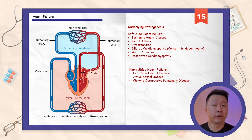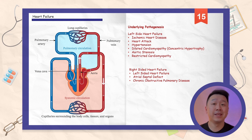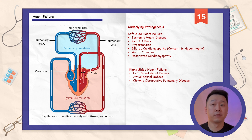Utilizing the circulatory flow diagram, we can envision blood flow into the different chambers of the heart. Deoxygenated blood gets pumped into the pulmonary circulation via the right ventricle, and oxygenated blood gets pumped into the systemic circulation by the left ventricle. In the case of increased resistance, the blood will always flow backward.